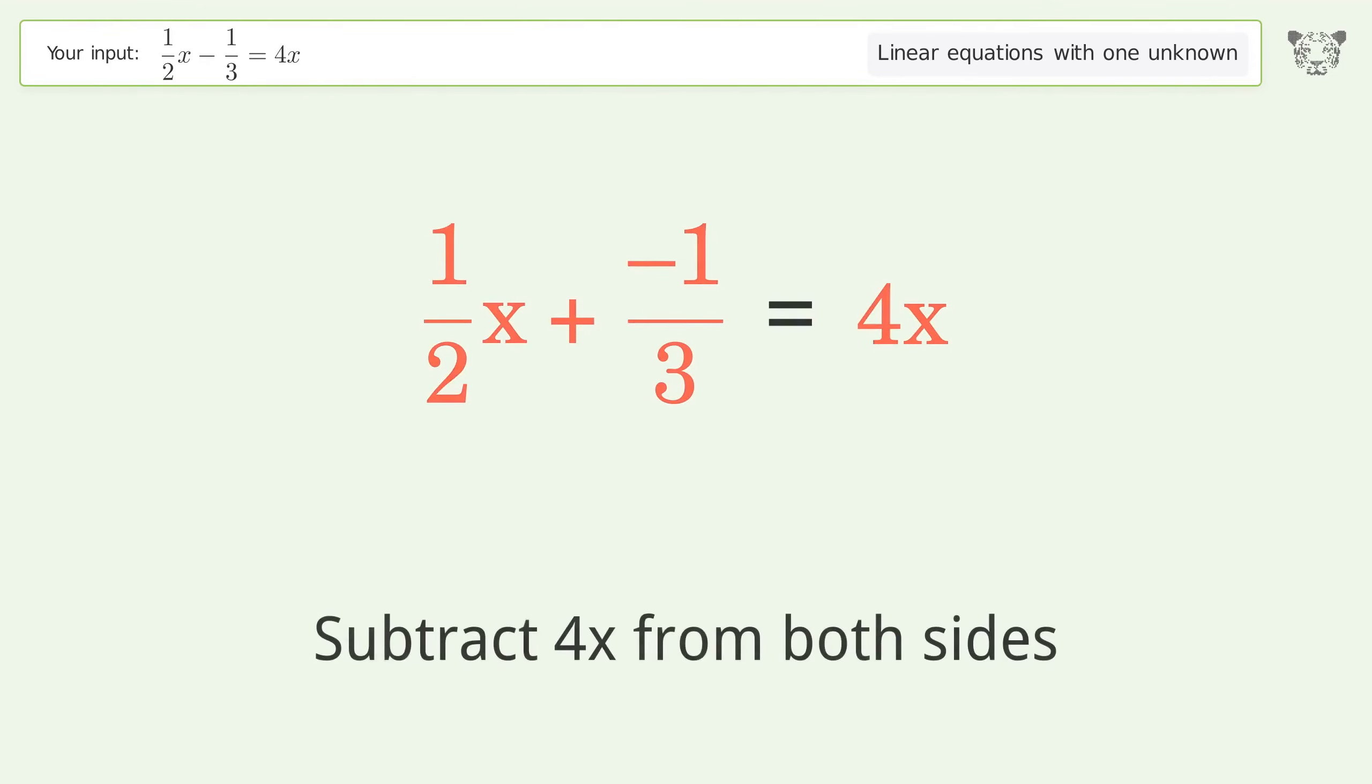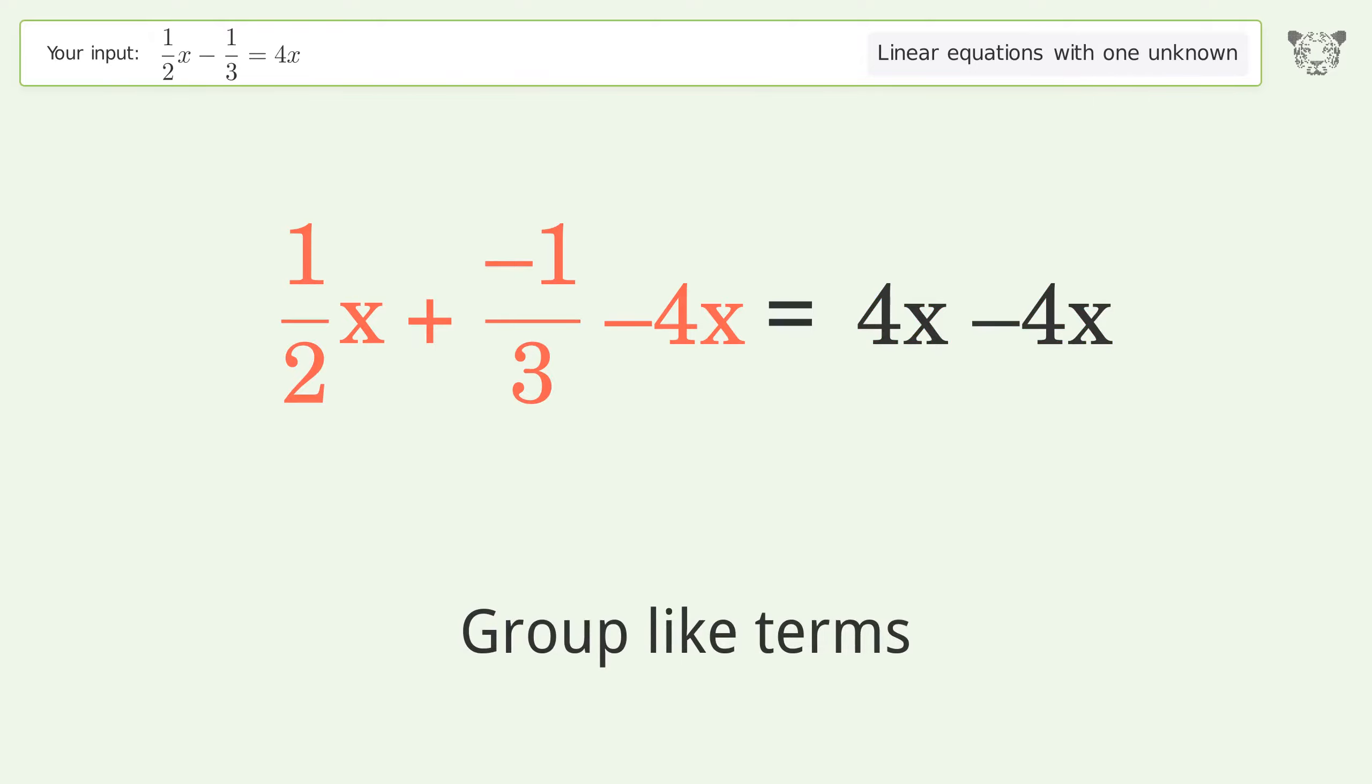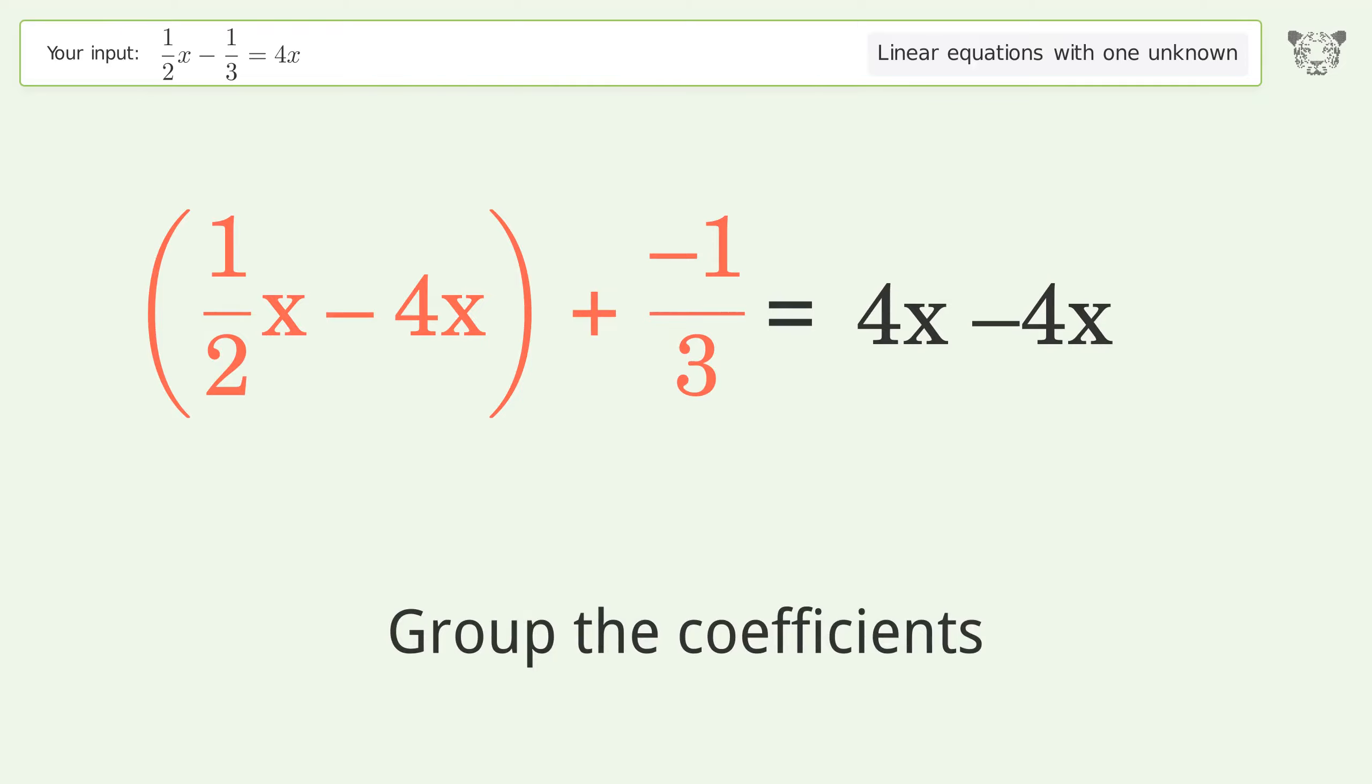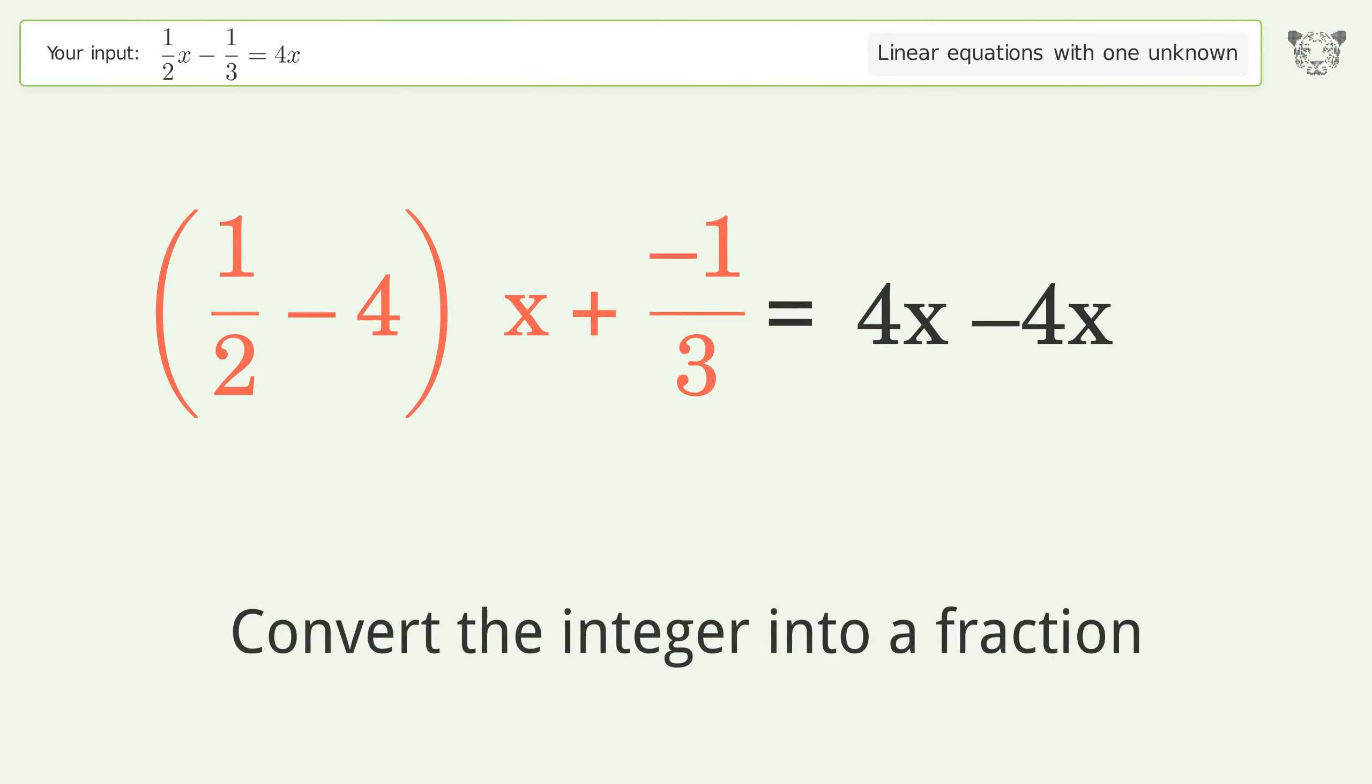Subtract 4x from both sides. Group like terms. Group the coefficients and convert the integer into a fraction.